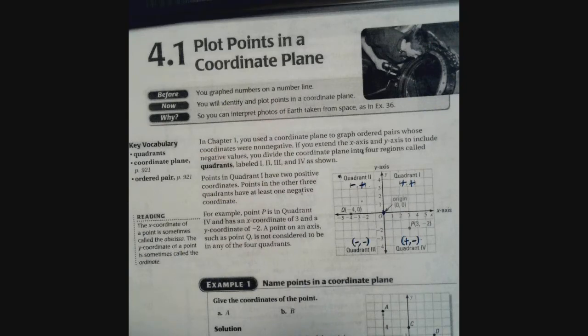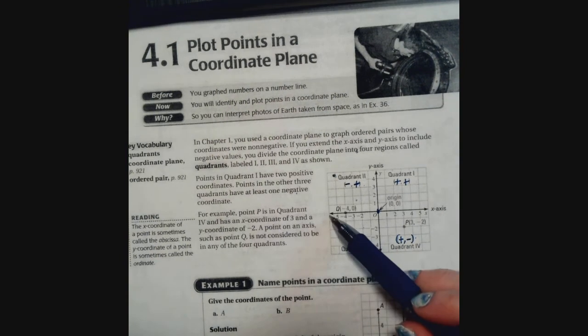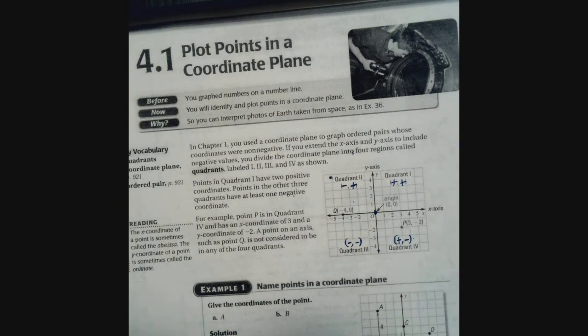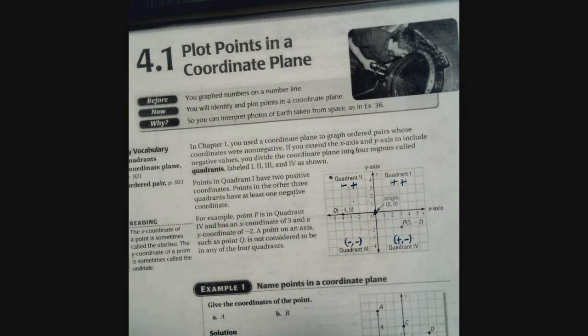We are going to begin with section 4.1 — this is something you've seen in pre-algebra, so this is just a refresher on plotting points in a coordinate plane. From the book, it shows a coordinate plane with two major axes: the x-axis, which goes left to right, and the y-axis, which goes up and down. Right in the center is the origin, which is always x equals zero and y equals zero.